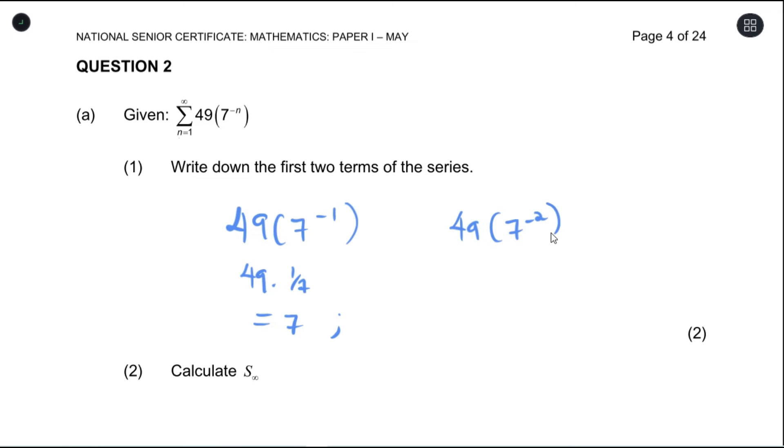Then for the second term, we have negative 2 because that would be the next term. So it is 49 times 1 over 49 which equals 1. So our first two terms of this series is 7 and 1.